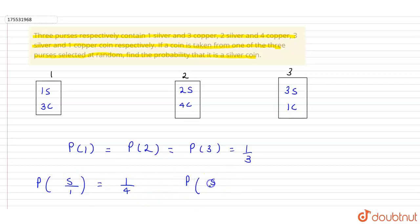The probability of selecting a silver coin from the second purse is 2 upon 6, which equals 1 upon 3. The probability of selecting a silver coin from purse 3 is 3 upon total coins, which is 4.